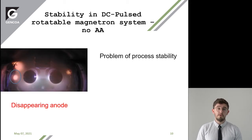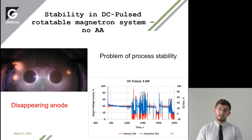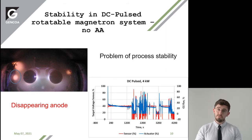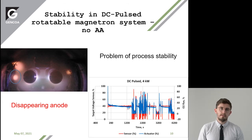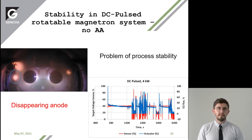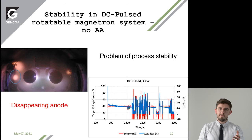In reactive sputtering, there is a chance that you coat the chamber walls with dielectric, and this removes the anode from your circuit. When running our SpeedFlo reactive sputter process control system, by trying to control the oxygen flow after the target voltage, you can see the target voltage is very unsteady. This is mirrored in the oxygen flow, which is also very unstable.